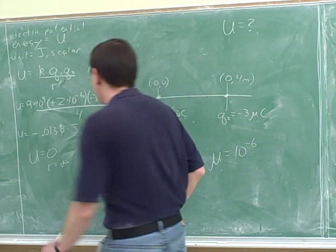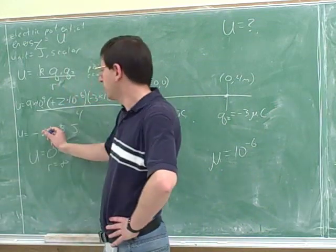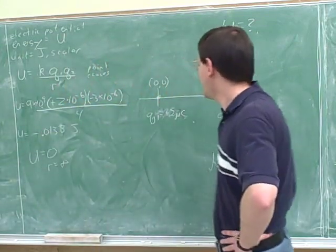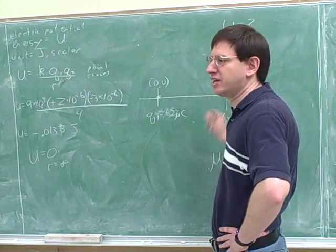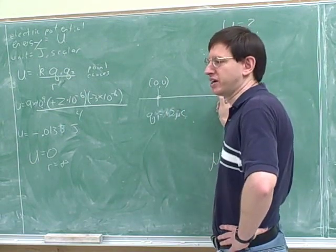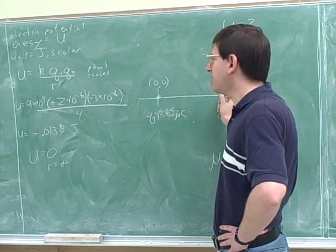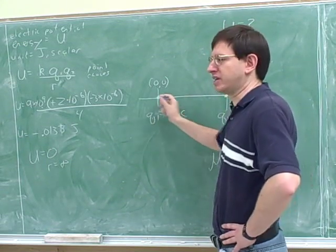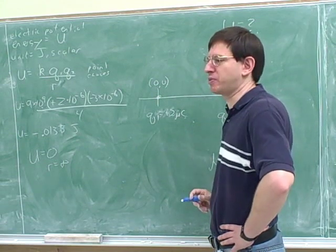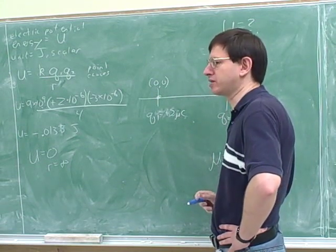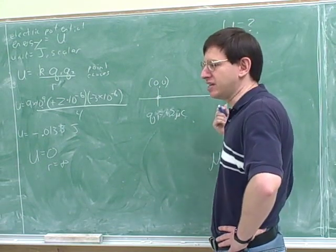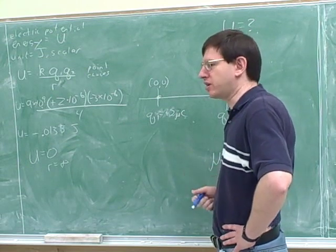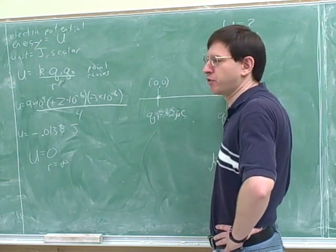Now, how would we interpret this over here? Well, if these particles started at infinity, it wouldn't actually take work to move them over here because they want to move over here. But instead, we could ask ourselves, how fast are these particles moving by the time they get to a four-meter separation? So the question might be, if the two particles start at infinity, and then they start moving towards each other, how fast will they be moving when they're at four-meter separation?